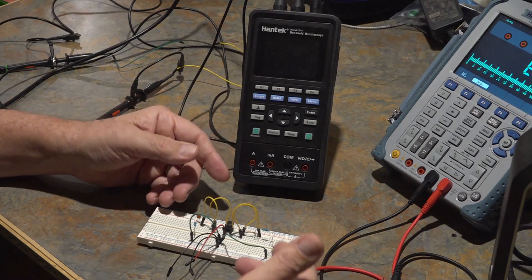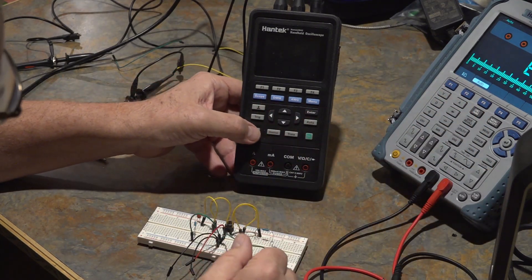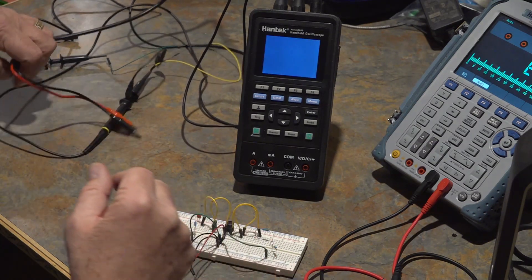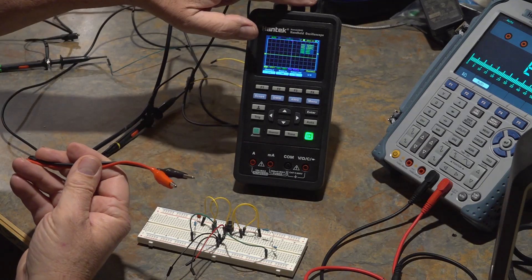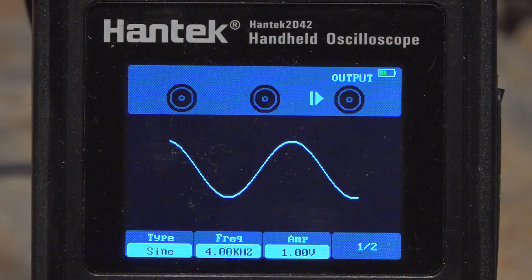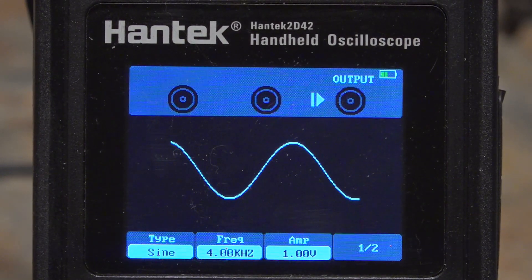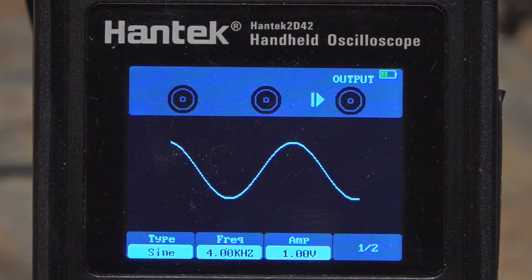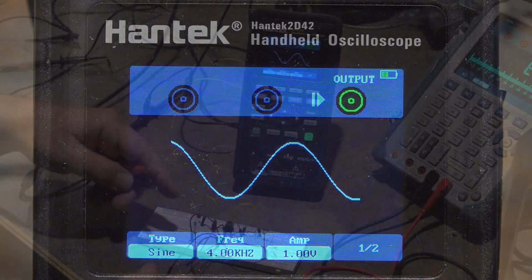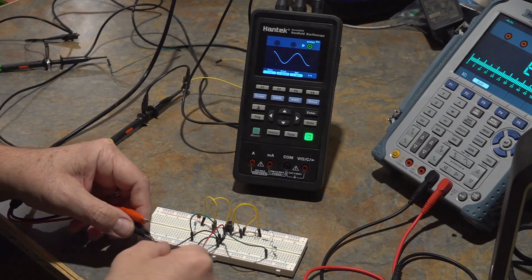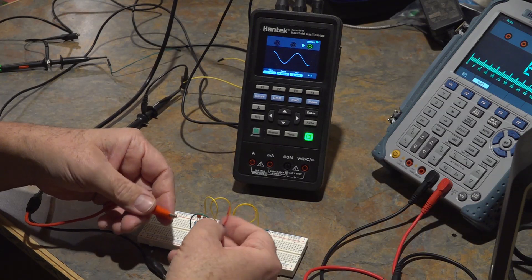Now we're going to use the Hantek. This is my Hantek, which is a higher end model, but this is what you guys are using. First thing I'm going to do is hook up the AC source, which is the output of the function generator. I'm going to hit AWG, select sine wave, 4 kilohertz in my case, and 1 volt peak which is 2 volts peak to peak. Then I'm going to hit run so the output indicator turns green, which means I have a signal on my output.